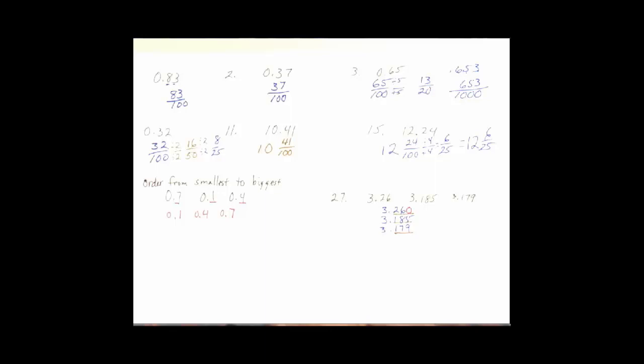Then we can know that this one's going to be the smallest. So this is going to go first. Then we're going to have 3.185, and then 3.26. We don't need the zero. Didn't hurt anything if we wanted to put it on. But we don't need it because we're ordering the original numbers.